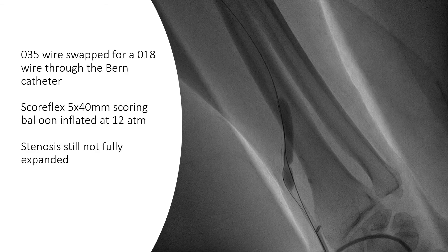We decided to try a scoring balloon. We swapped the 0.035" wire for an 0.018" wire to the Berenstein catheter, then deployed a ScorFlex 5 mm scoring balloon at 12 atmospheres.